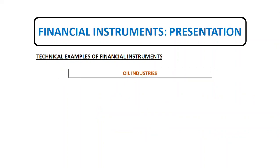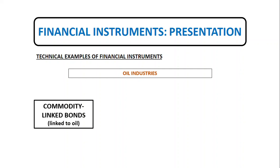For other industries like oil industries, financial instruments also include contracts that give rise to a non-financial asset or non-financial liability, and such arrangements often give one party an option to exchange a financial asset or a non-financial asset. For example, in oil industries, an oil-linked bond or commodity-linked bond may give the holder the right to receive a stream of fixed periodic interest payments and a fixed amount for a fixed quantity of oil. The desirability of exercising this option will vary over time depending on the fair value of the oil relative to the exchange ratio of cash for oil inherent in the bond, but the intentions of the bond holder do not affect the substance of the component of the assets.